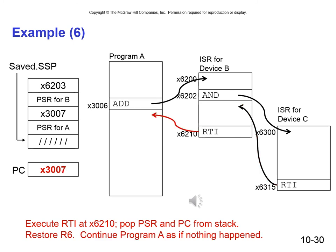Then device B's interrupt service routine is not interrupted and runs to completion. It hits its RTI — return from interrupt — and we pop the PSR and the PC from the stack, restore R6, and continue program A at hex 3007 as if nothing had happened. Because of the speed of modern processors, this happens seamlessly and appears instantaneous.